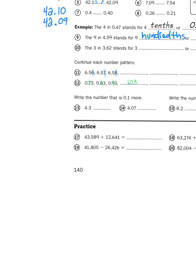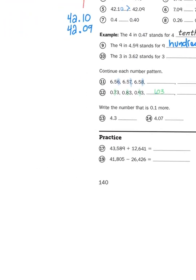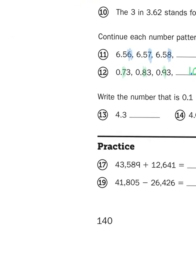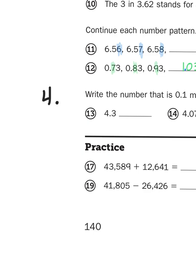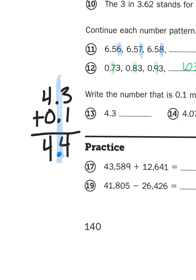It says write the number that is one-tenth more. That sounds an awful lot like an addition problem. So when I add, I want to add with my numbers vertically aligned. So all I'm doing here is adding 4.3 plus 0.1. If I squint my eyes for just a second, I can ignore the decimal points and just tell myself, what's forty-three plus one? Well, that would be forty-four, and 4.3 plus 0.1 would give me 4.4. Basically, all I did here is I added forty-three plus one, but the decimal points made the value different. I could think of it as adding forty-three tenths plus one tenth gives me forty-four tenths, and another way of saying forty-four tenths is, of course, 4.4.